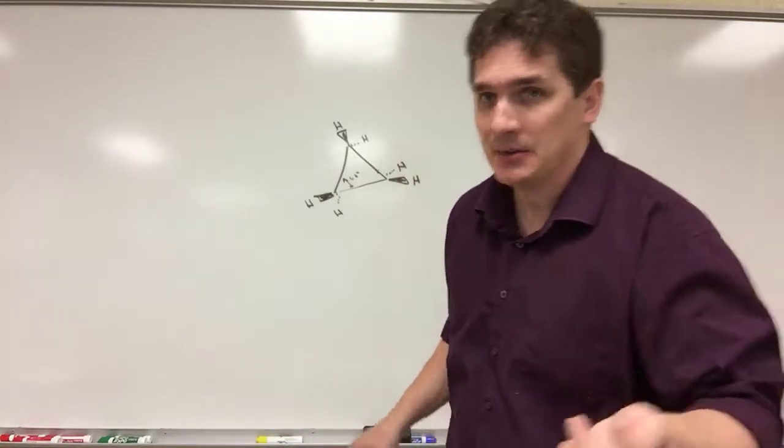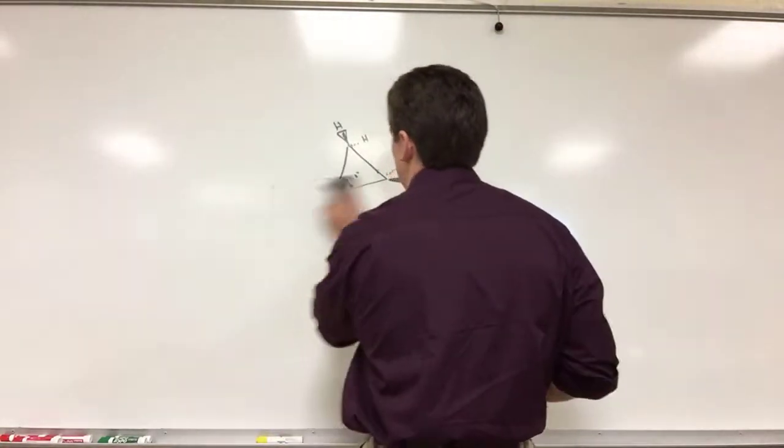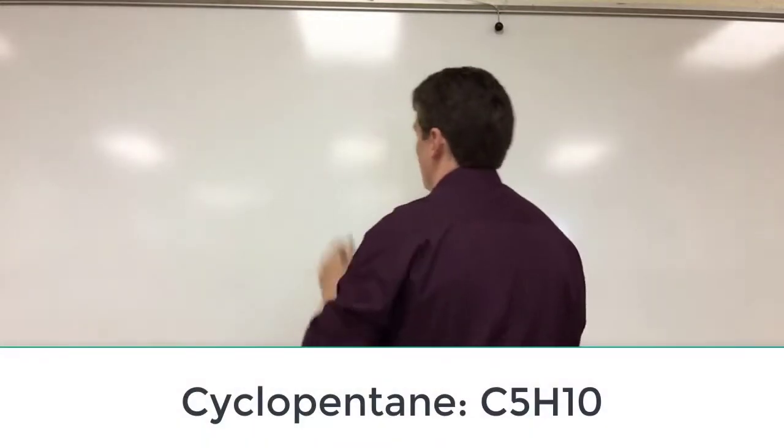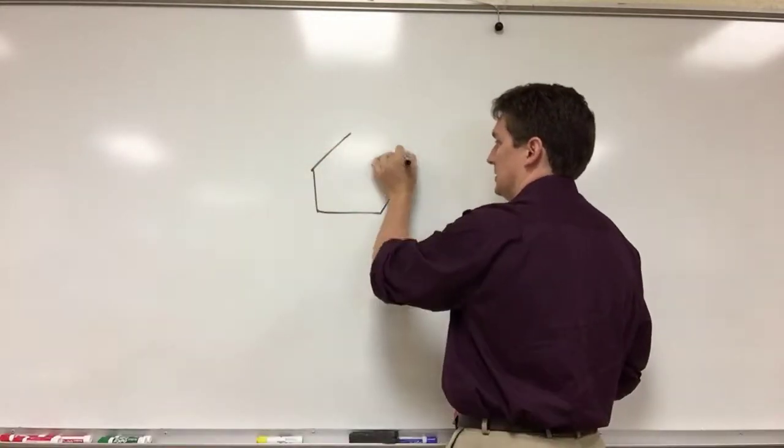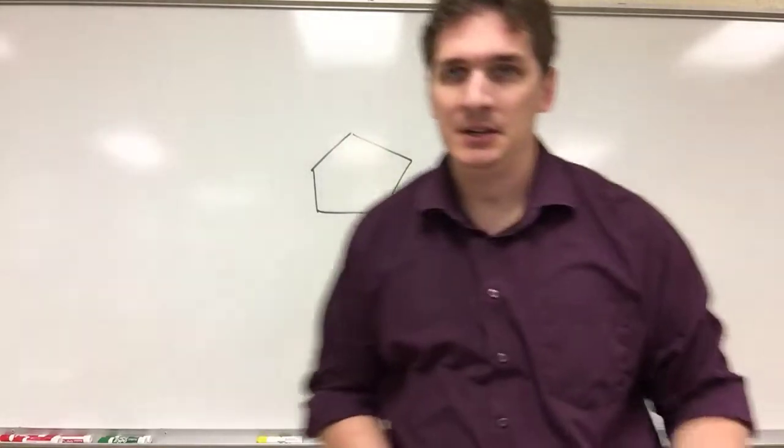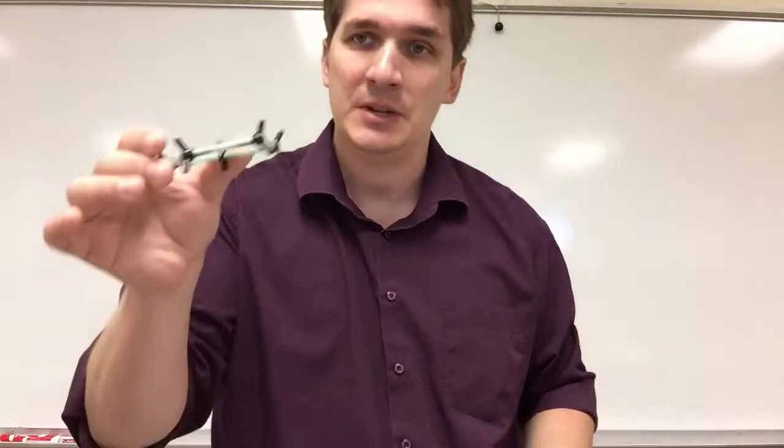How about if we go to something like cyclopentane? Well cyclopentane, we have five carbons. Now our five carbon ring here, there's actually three different ways we can align the carbons. The simplest is to put all five in plane.